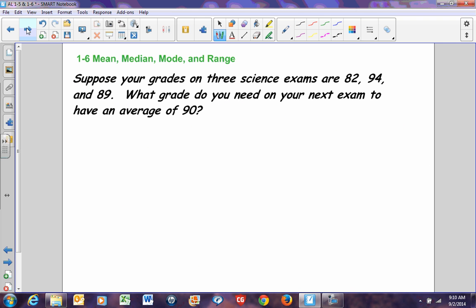Suppose your grades on three science exams are 82, 94, and 89. What grade do you need on your next exam to have an average of 90? Well, you have three exams and you know you're going to have a fourth exam. Since we don't know the score on that fourth exam, that fourth exam is an unknown. So we need to give it a value to put in. Since it's an unknown, we're going to give it a variable, and I'm going to give it the variable X.